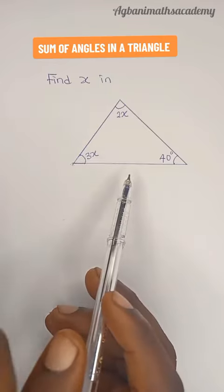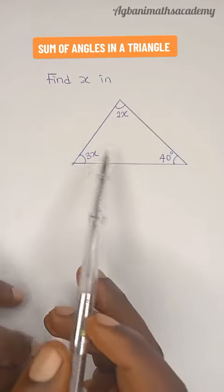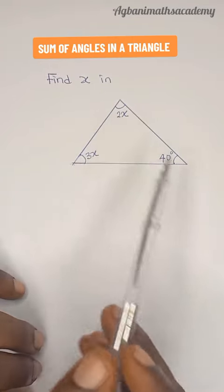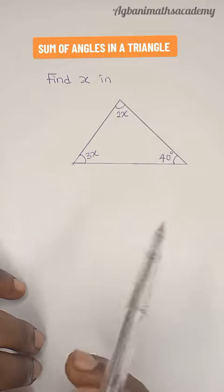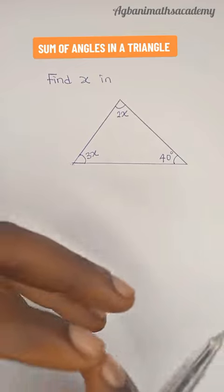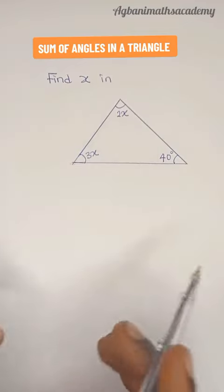Now, the triangle has three sides and three angles. So here the angle is 3x, the angle here is 2x, and the angle here is 40 degrees. In order to find the value of x, we need to apply sum of angles in a triangle.